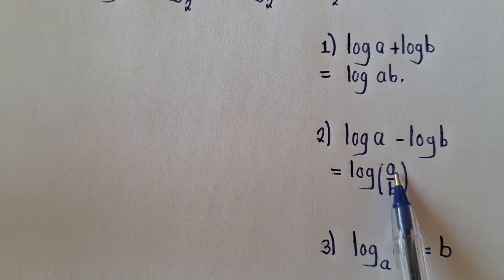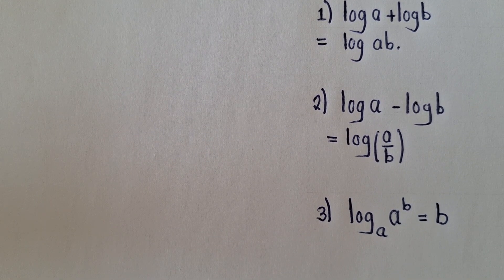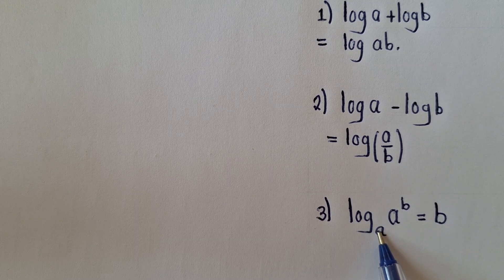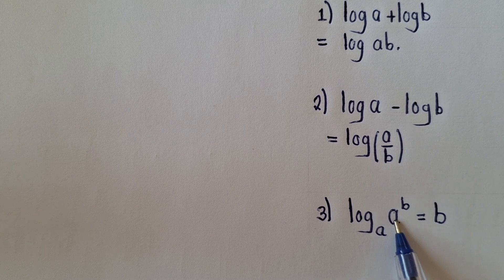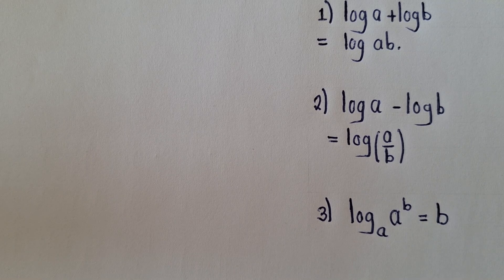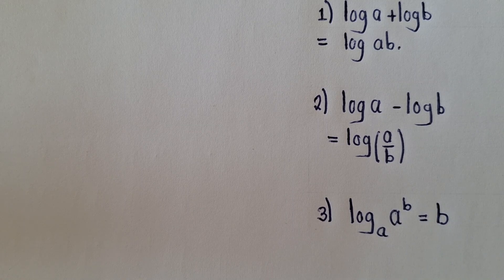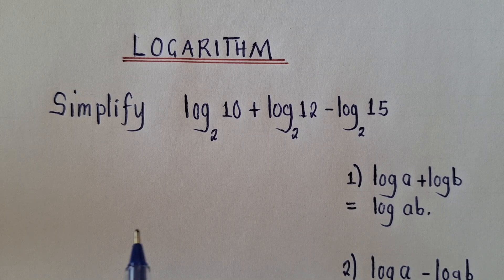So log(a) minus log(b) becomes log(a/b) — minus changes to division. And property 3 says that when you have a log where the base equals the number inside raised to a power, the whole expression simplifies to just that power.